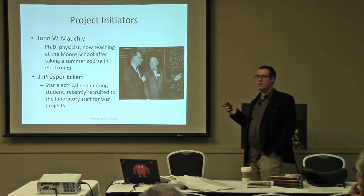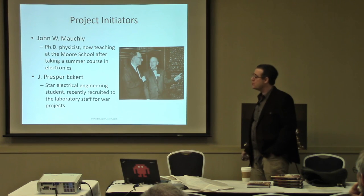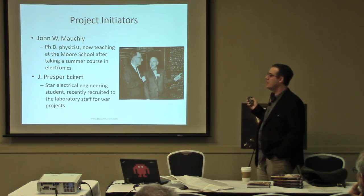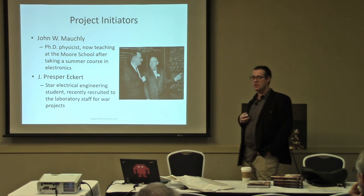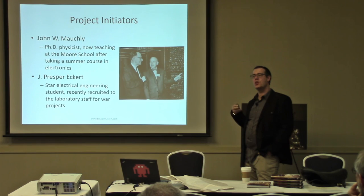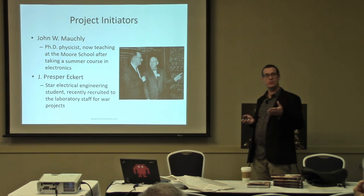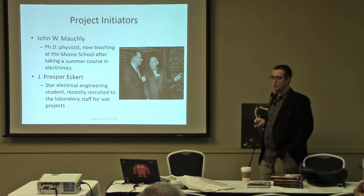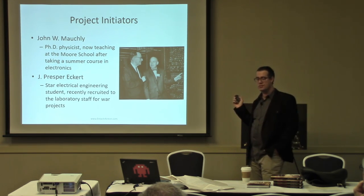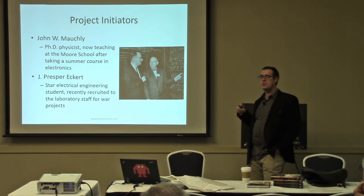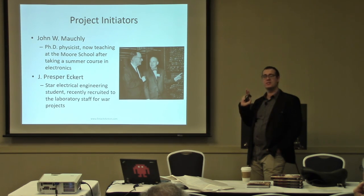The two project initiators typically associated with ENIAC were John W. Mauchly and J. Presper Eckert. Mauchly had graduated with a PhD in physics during the Great Depression, retrained in electronics taking advantage of a special wartime course, then got a faculty job at the Moore School. Eckert was the Moore School's star engineering student who had recently graduated and been recruited to the laboratory staff for war projects. They had other radar-related projects there as well, and finished up building an extra floor to accommodate sponsored projects.